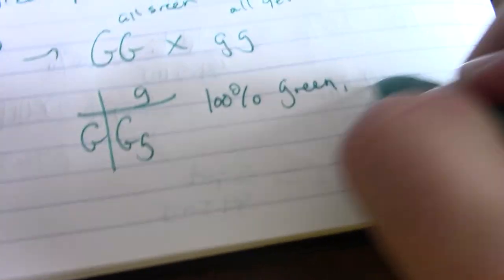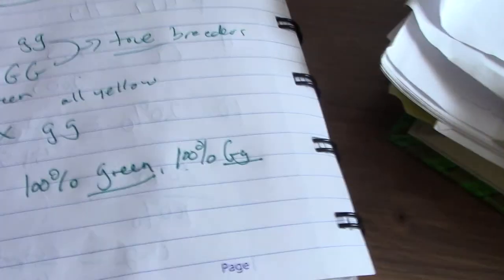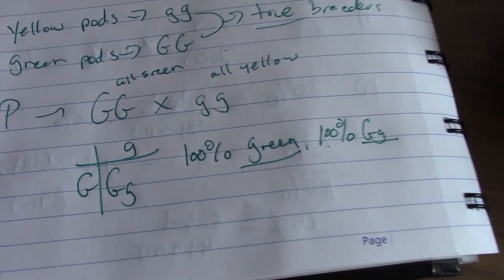So the F1 will be big G and little g, because there's only one allele coming from each parental. You get big G, little g. So we have 100% green and 100% big G, little g. So that's your phenotype, and this is your genotype. Big G, little g is your geno. The green is your pheno.